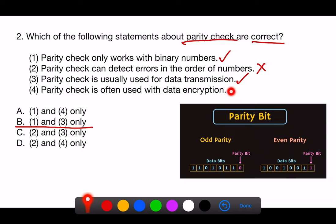4. Parity check is often used with data encryption. Incorrect. Parity checks are not directly related to data encryption. Encryption is about securing data against unauthorized access, whereas parity checks are about error detection. While both can be components of a comprehensive data security and integrity strategy, parity is not typically used as part of the encryption process itself.